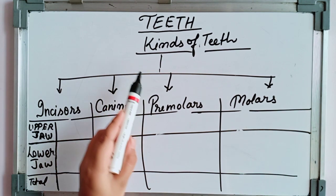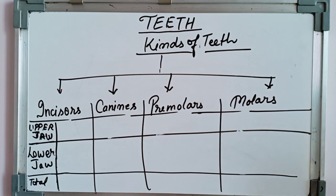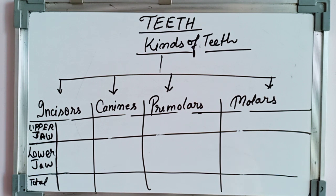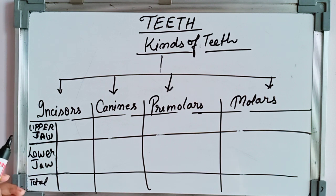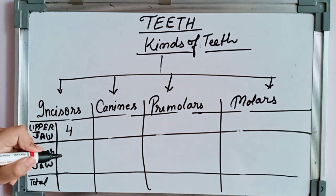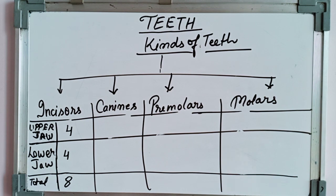Now I will explain the kinds of teeth. Your milk teeth start falling and new, larger and stronger permanent teeth start growing. There are 32 teeth in an adult's mouth. There are four kinds of permanent teeth depending on their functions. First, incisors — there are four front teeth in each jaw, so eight incisors in total. They help us to bite and cut food, and incisors are chisel-shaped.